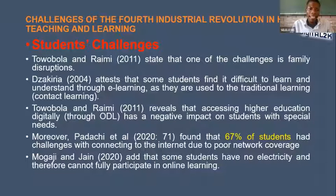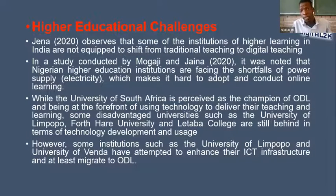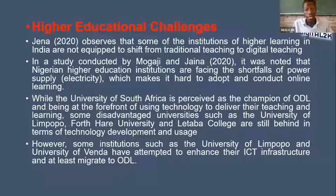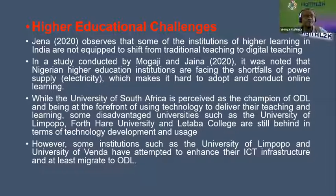In terms of higher educational institutional challenges: disadvantaged institutions such as the University of Limpopo and Fort Hare, with poor or inadequate ICT infrastructure, have struggled to roll out online learning. Registration was a problem because of poor ICT, and some lecturers do not understand online teaching and learning very well — so it became a challenge for other institutions.